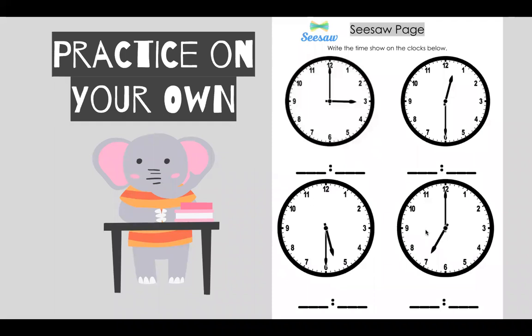Now my second grade friends, you are going to practice on your own with your seesaw page. So first, look at each of these clocks and write down the time. Remember, you look at the short hand for the hours first and write that first. And then you look at the minute hand.